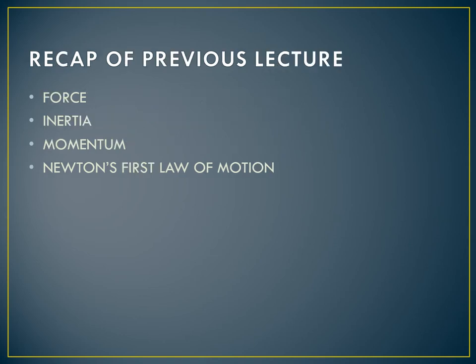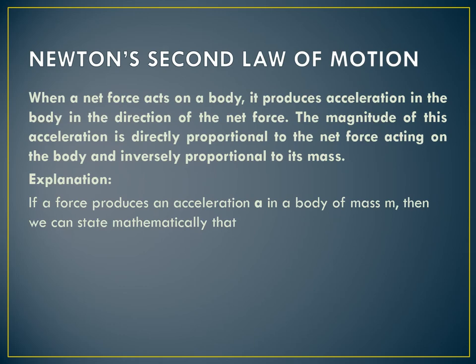Before starting the lecture, let's have a recap of the previous lecture. We discussed force — force moves or tends to move, stops or tends to stop the motion of the body, and force can also change the direction of motion. We discussed inertia, which is the property of the body due to which it resists any change in its state of rest or of uniform motion. We discussed momentum, which is the quantity of motion possessed by a body due to its mass and velocity. Finally, we discussed the first law of motion: a body continues its state of rest or of uniform motion in a straight line provided no net force acts on it. This law is also known as the law of inertia.